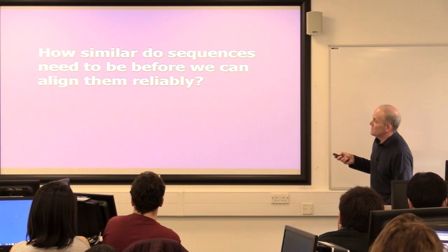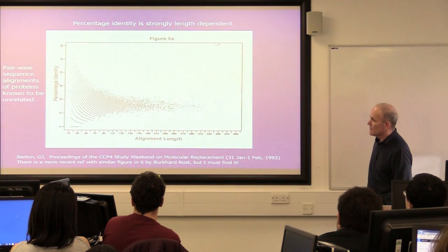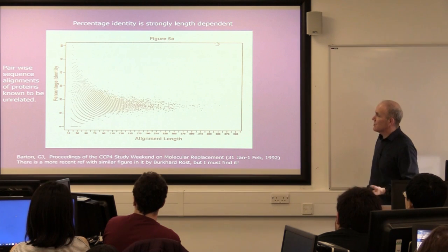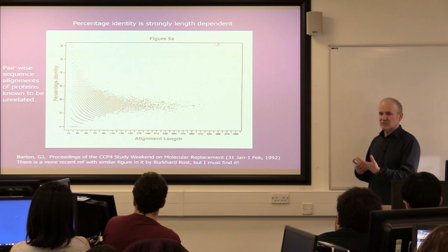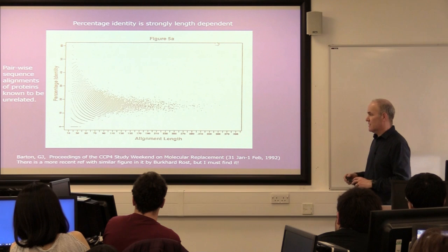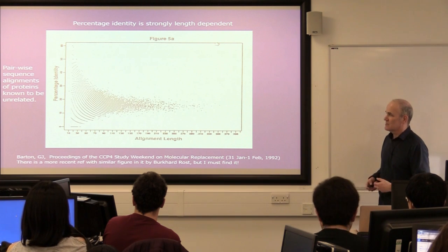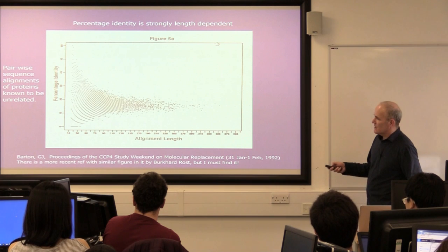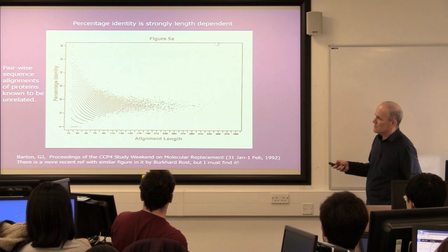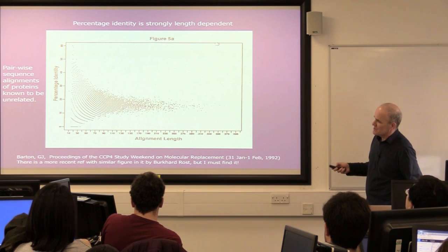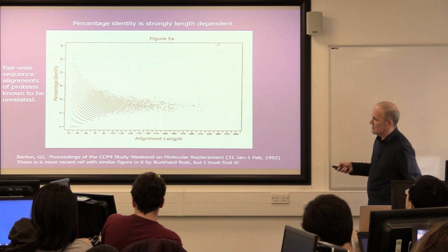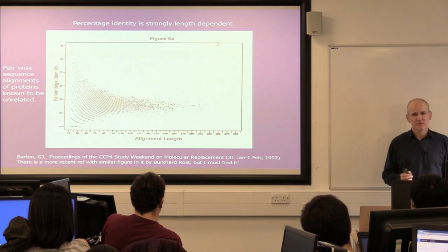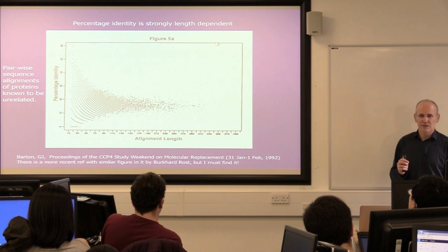How similar do sequences need to be before we can align them reliably? One of the important things to think about is the measure of percentage identity for how similar sequences are. It's quite useful, but you have to be careful because percentage identity is very dependent on how you align the sequences, and also very dependent upon the length of the sequences. Each of these dots is a pairwise sequence alignment — two sequences aligned — and all of these sequence pairs are unrelated. These are proteins that have absolutely no relationship with each other.